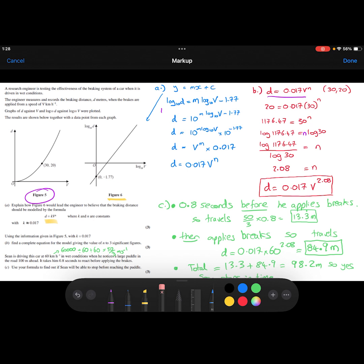We're told that Sean is driving his car at 60 km per hour in wet conditions, and he notices a large puddle in the road 100 metres ahead. It takes him 0.8 seconds to react before applying the brakes. Can he stop in time? First thing to note is it takes him 0.8 seconds to react before applying the brakes. Here I've worked out how far he's going to travel in those 0.8 seconds.